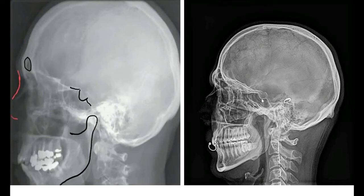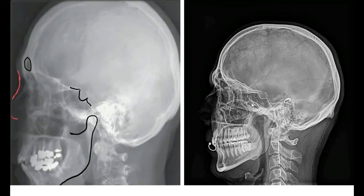Going a little backwards, there is a fossa called the sella turcica, also known as the pituitary fossa. It is bounded anteriorly by the tuberculum sellae and posteriorly by the dorsum sellae, along with the anterior and posterior clinoid processes. Below the sella turcica is the sphenoidal air sinus.